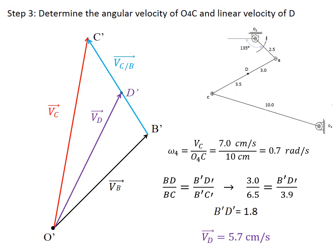In this example, it is shown how to use the velocity image method to find the velocity of points in a mechanism.